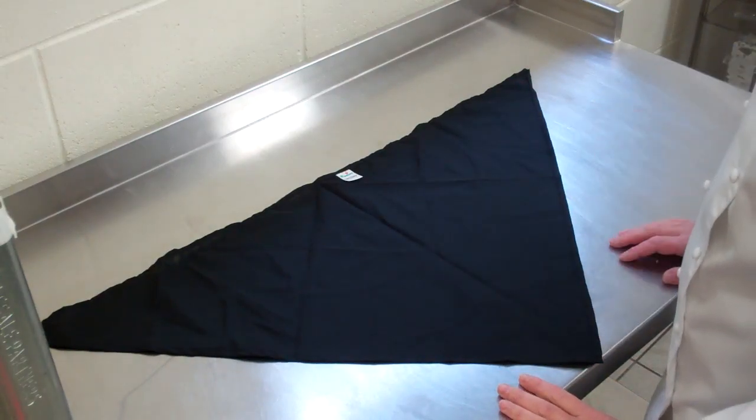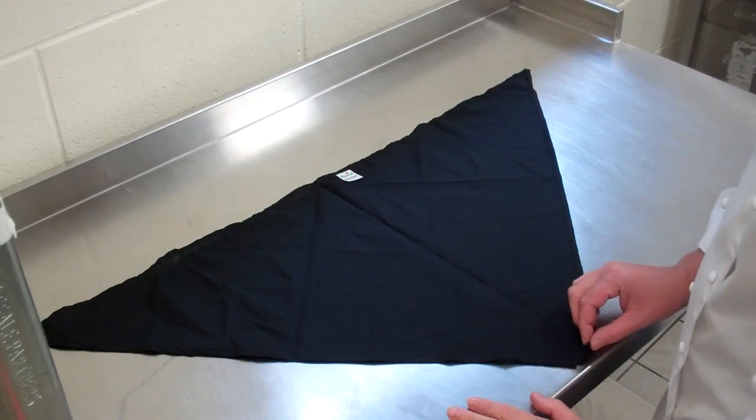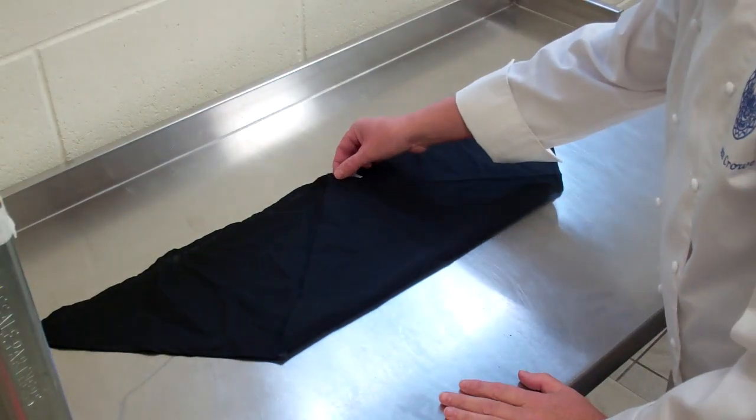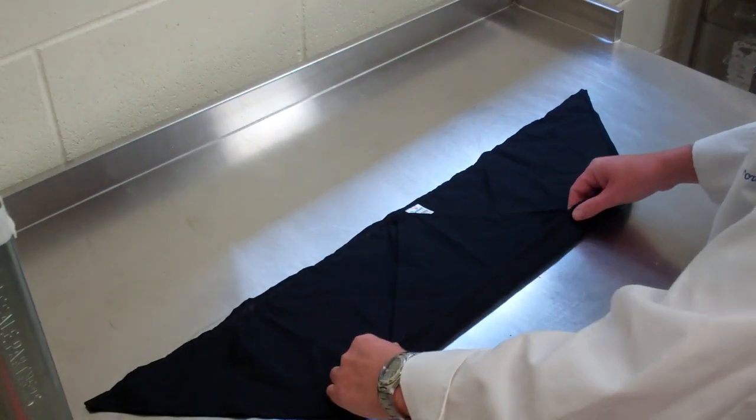I'm going to start off with a basic triangle here. The first thing I'm going to do to prepare so I can roll it is I'm going to roll the point up to there, bring it down, and then I'm going to roll about an inch.